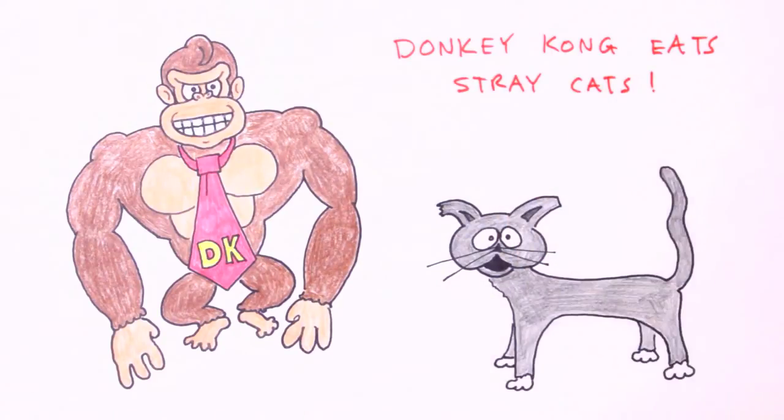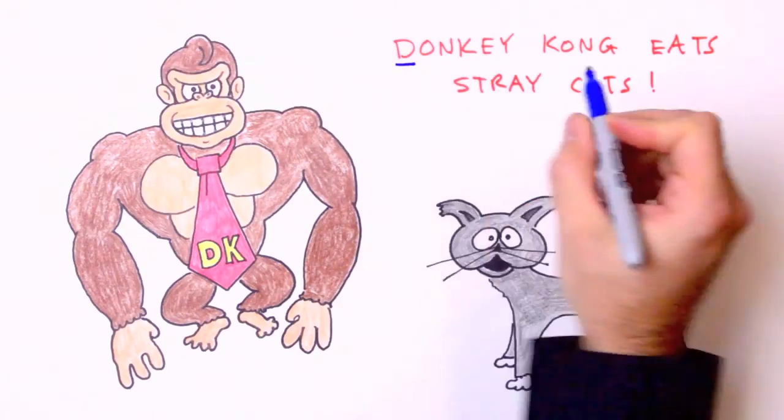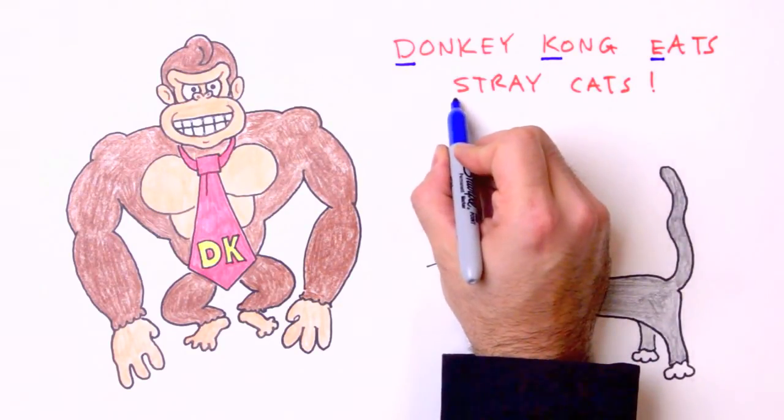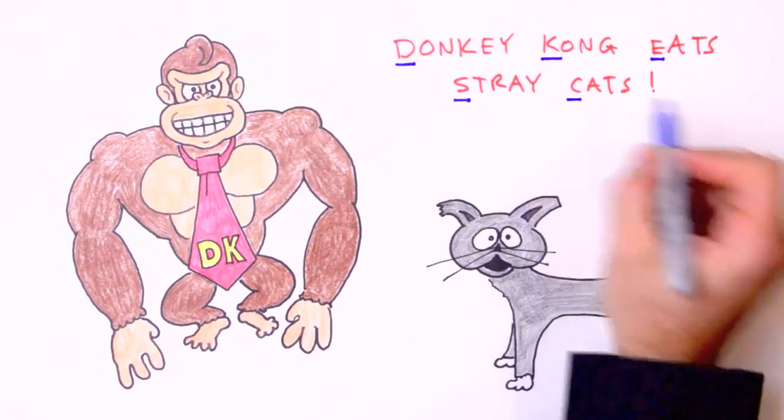No, it's not very humane, nor is it even accurate. Everybody knows that DK is a strict bananaitarian. But such a hilariously graphic mnemonic device is pretty hard to forget, and that's the mark of a good mnemonic device. So there it is: Draw a picture, Knowns and unknowns, Equation, Solve symbolically first, and Check your answer. Donkey Kong Eats Stray Cats.